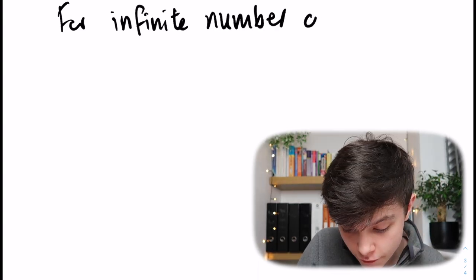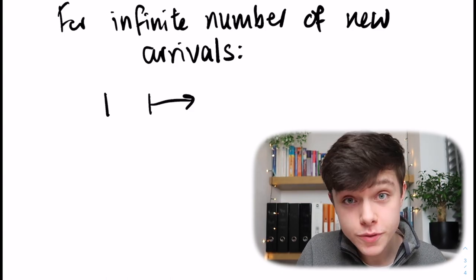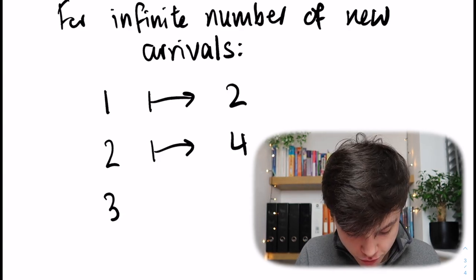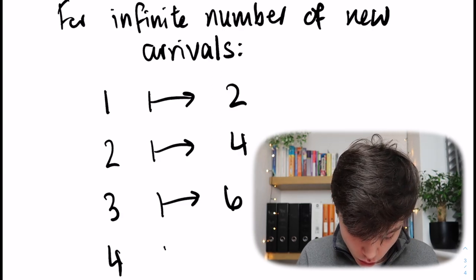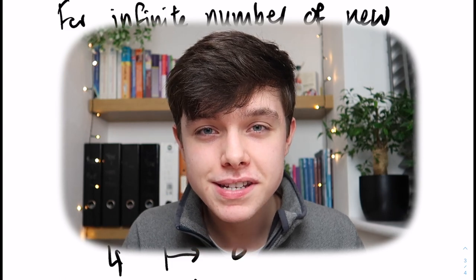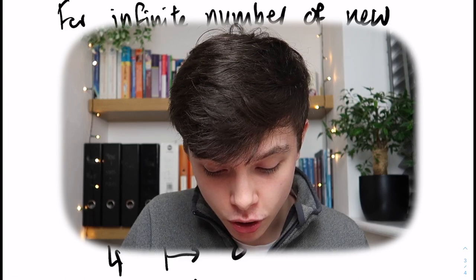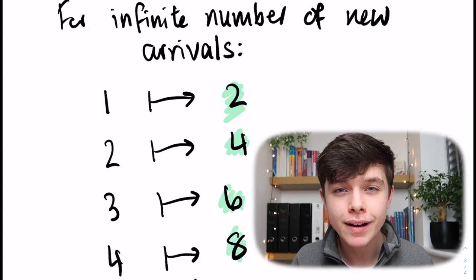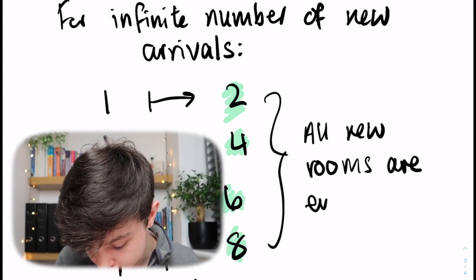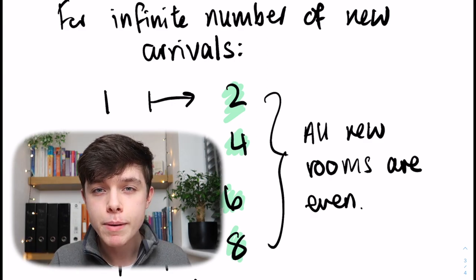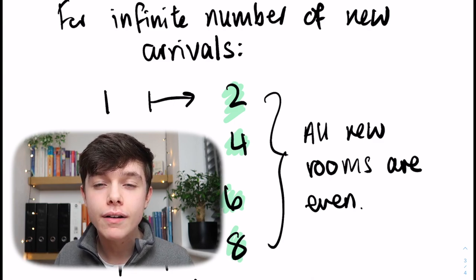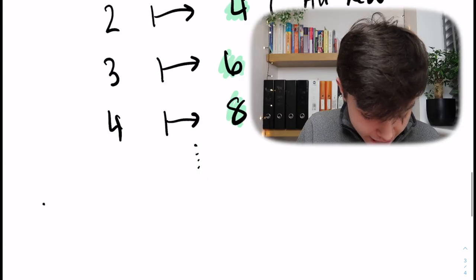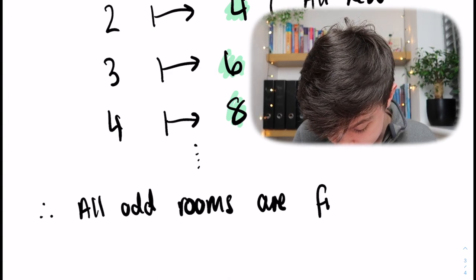So what we need to do in this case is move everybody up to the room number that is double their current room number. For an infinite number of new arrivals: room one moves to room two, room two moves to room four, room three moves to room six, room four moves to room eight, and so on. You can see the pattern — the new rooms being assigned are all even, because two times any number is even. So all new rooms are even, and since a number can only be even or odd, all the odd rooms are now free.